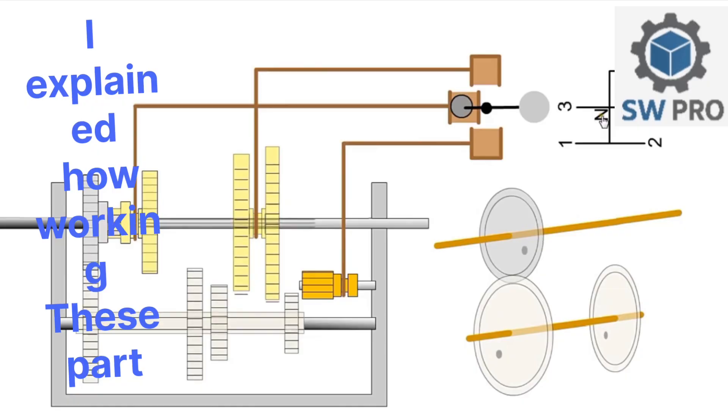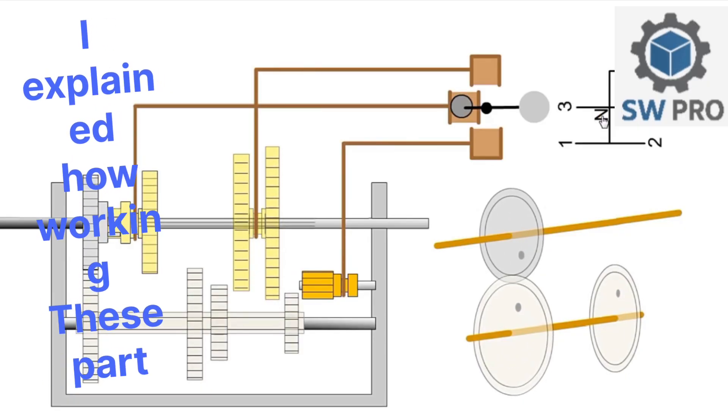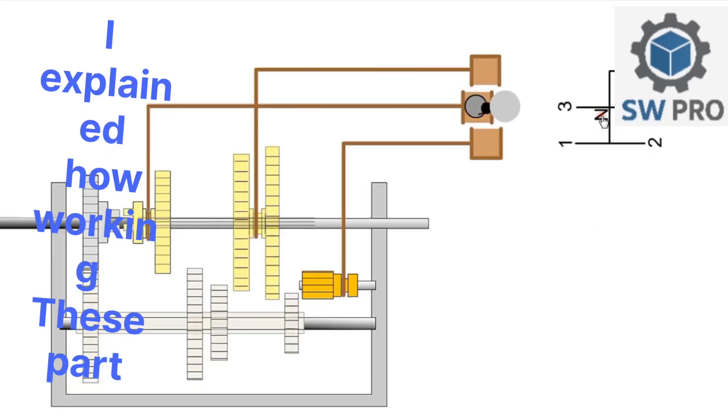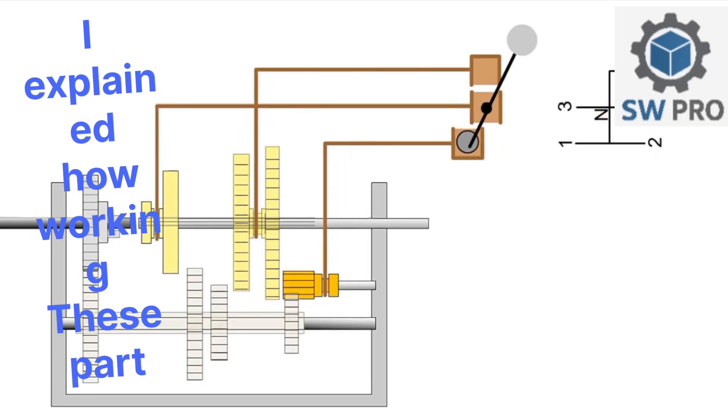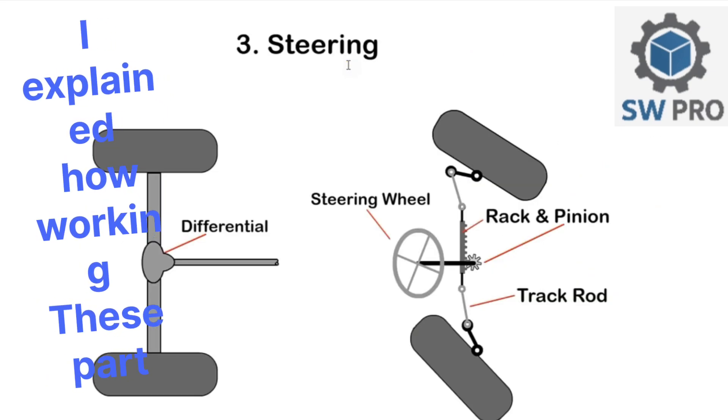We see that fourth gear is straight through - the crankshaft is connected directly to the output shaft. Some cars have an overdrive, which means the output shaft is rotating faster than the crankshaft. This is sometimes used for fifth and sixth gear. For reverse, an additional pinion is inserted to provide rotation in the opposite direction.